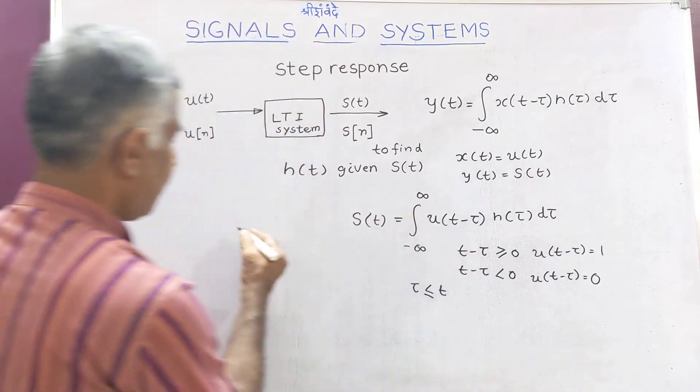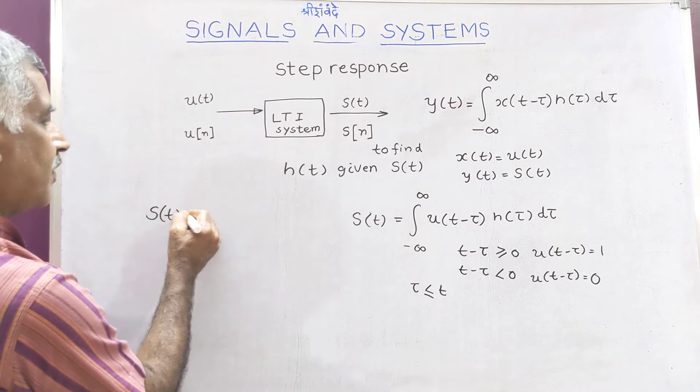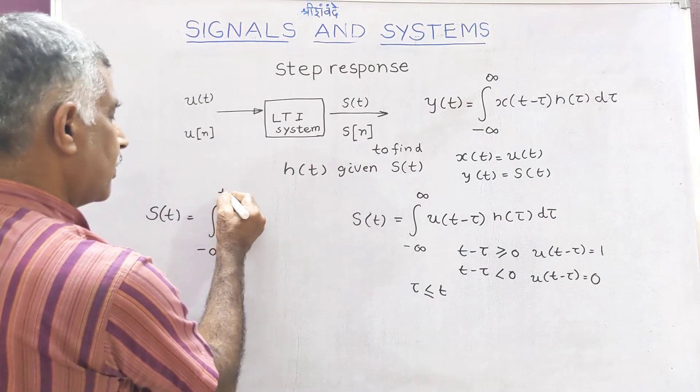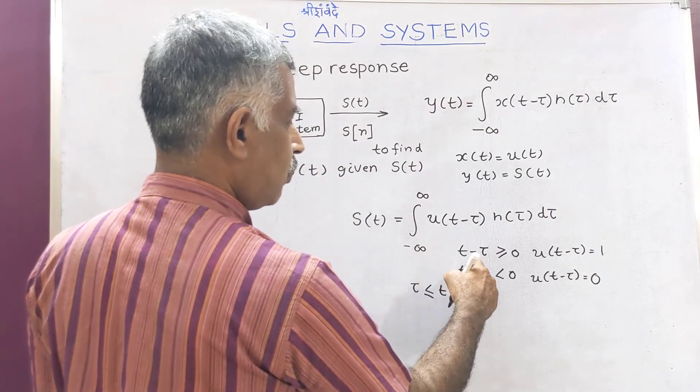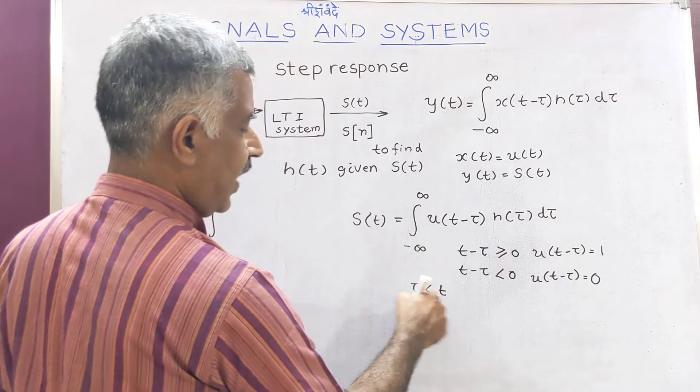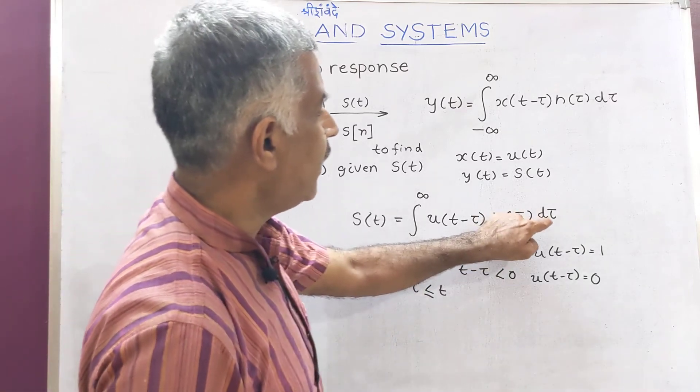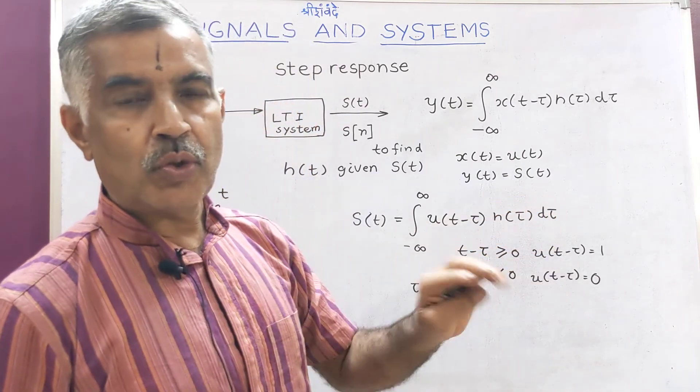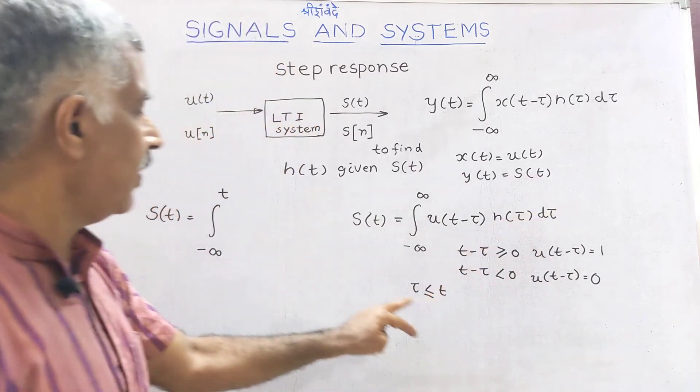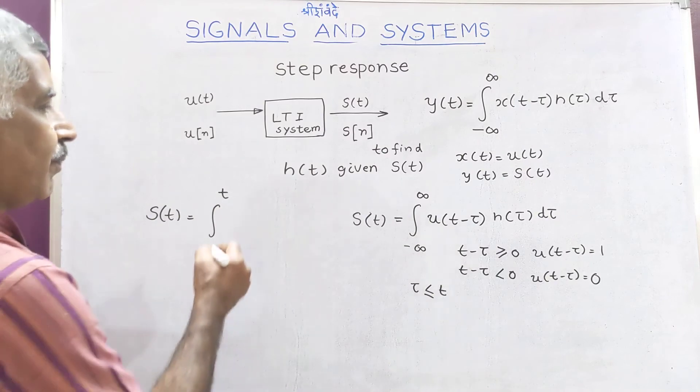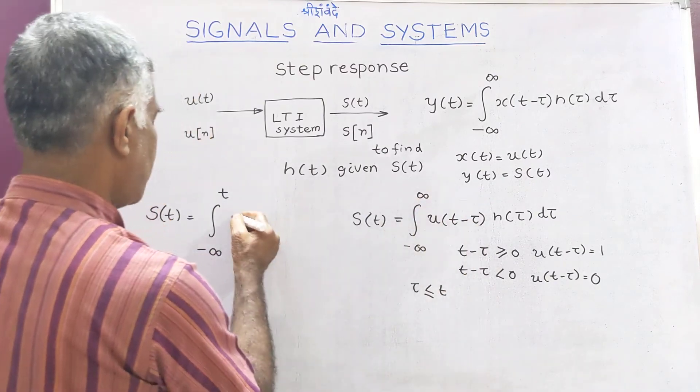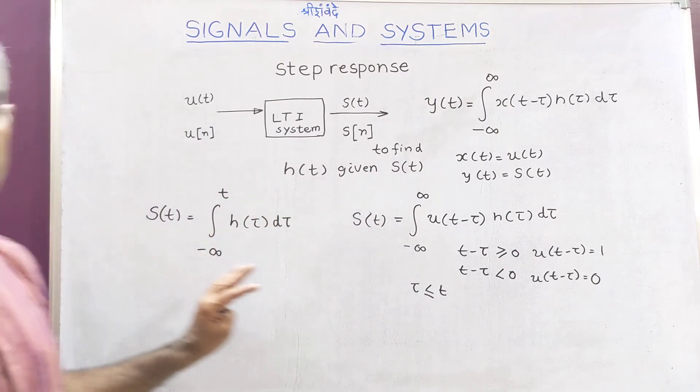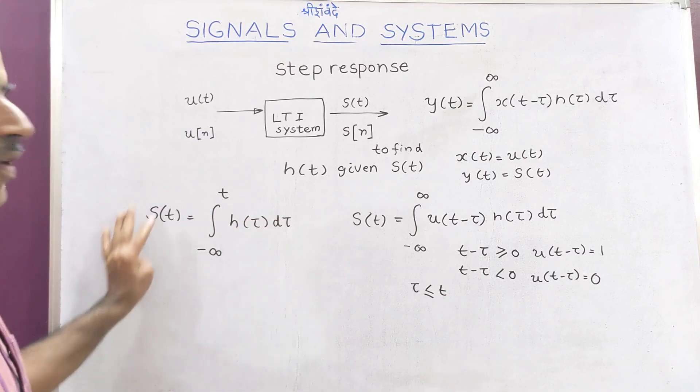You can interpret the integral as S of T equals integral from minus infinity to T of H of tau d tau. Because T minus tau greater than or equal to zero means tau less than or equal to T. In the integral, tau is the variable and T is a constant. That is why the limits are minus infinity to T, and the value is 1. Therefore, we have H of tau d tau. So we have to remember this formula for solving problems.